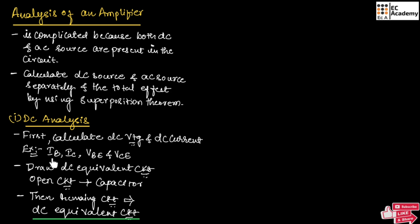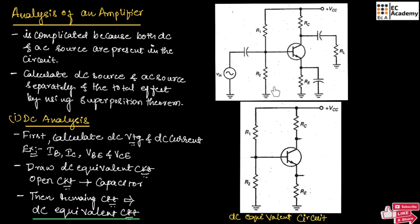For example, if we consider this amplifier circuit, to perform the DC analysis, we need to open-circuit all the capacitors that are connected to the amplifier. The remaining circuit is known as the DC equivalent circuit. So, from this amplifier circuit, we have open-circuited all the capacitors that are connected, and the remaining circuit is the DC equivalent circuit.